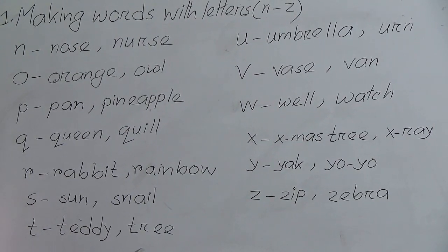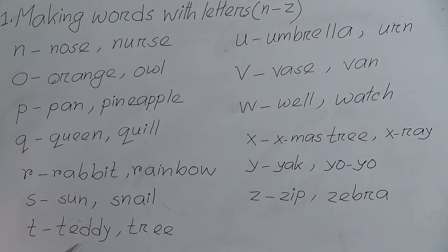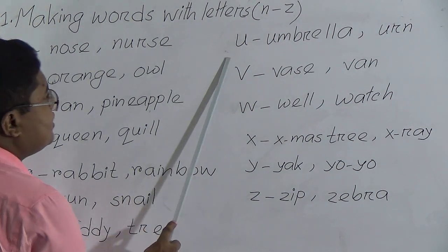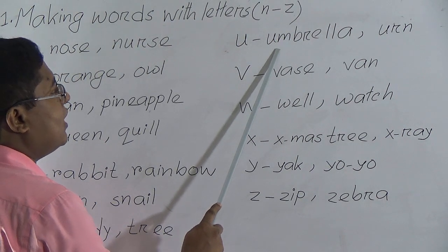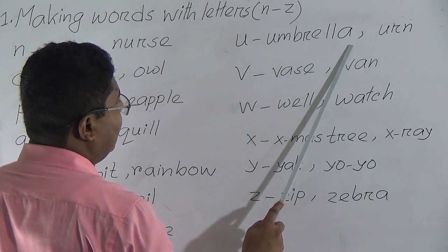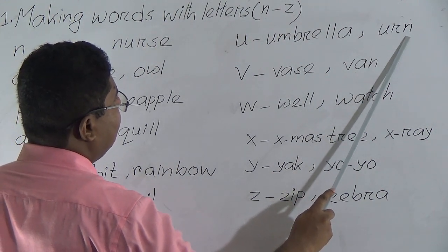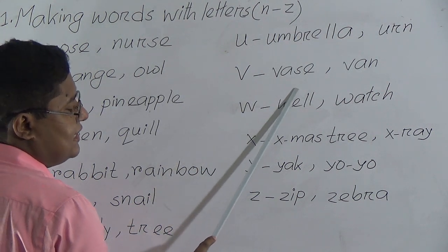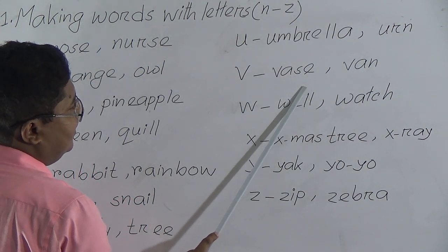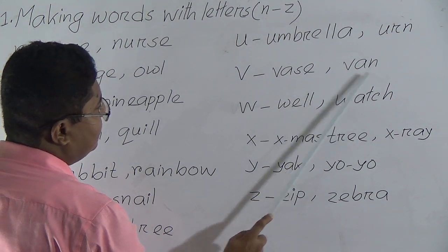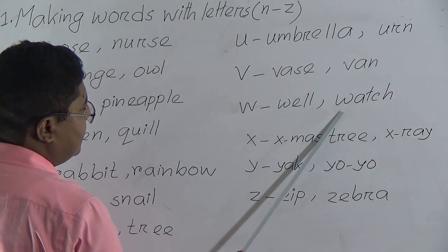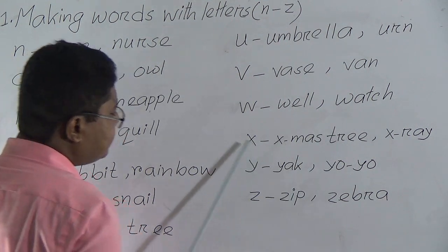T for teddy, T-E-D-D-Y. T for tree, T-R-E-E. Next one: U for umbrella, U-M-B-R-E-L-L-A. U for urn, U-R-N. V for vase, V-A-S-E. V for van, V-A-N. W for well, W-E-L-L. Watch, W-A-T-C-H.